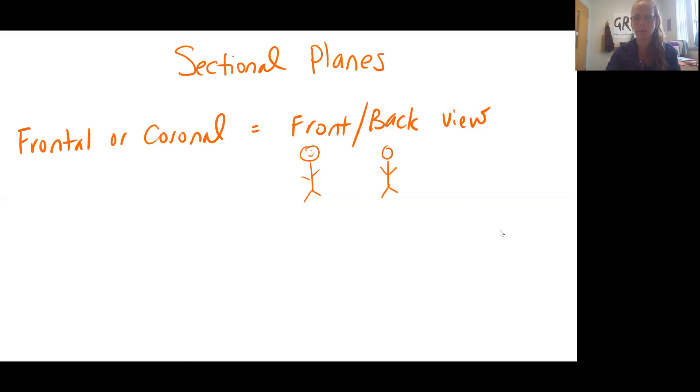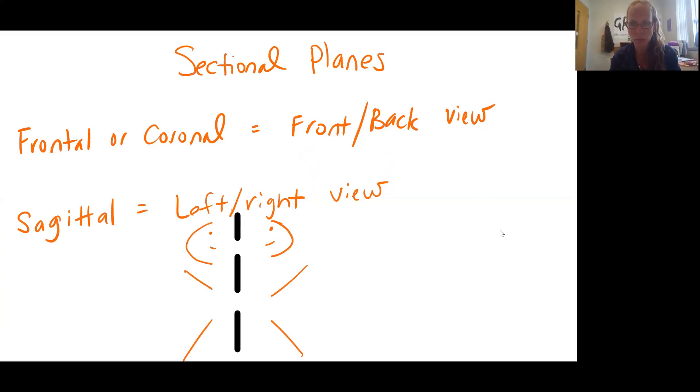Next, we have our sagittal plane. The sagittal plane is your left and right view. So a mid-sagittal would be straight in the middle. Parasagittal would be on either side of that midline. So let me use this guy here. And I tried to put a little eyes and mouth so you can kind of see the front. And so now I'm going to do my cut like this. So I get left and right sides, sagittal view.